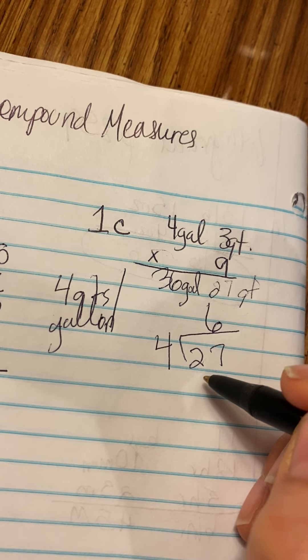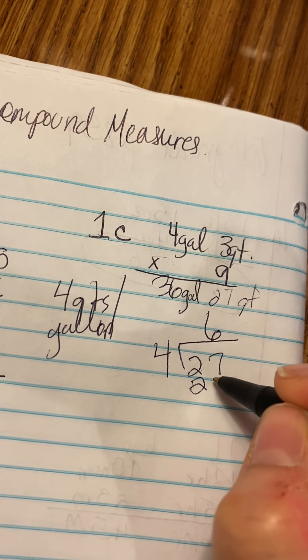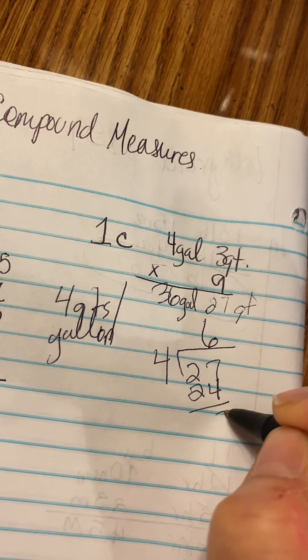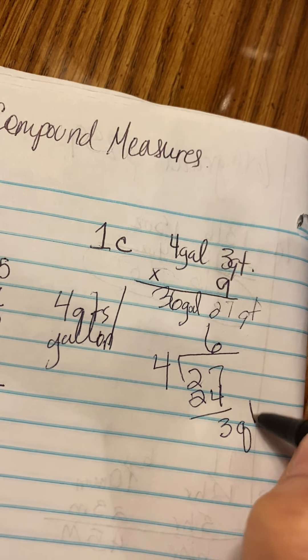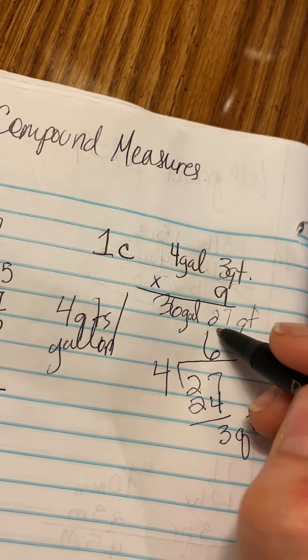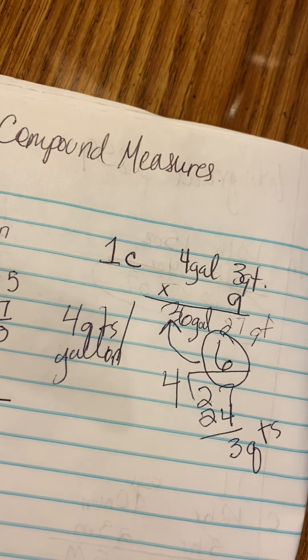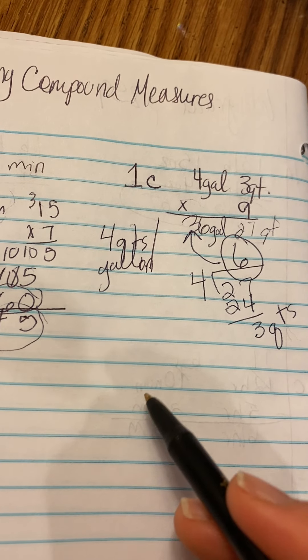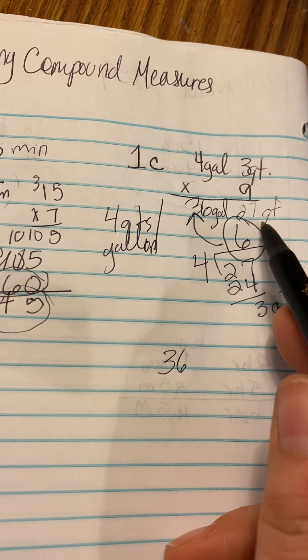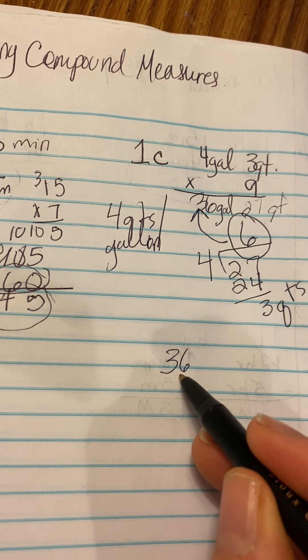6. 4 times 6 is 24. And we have 3 quarts left over. And we're going to add these gallons over here. So we have 36 plus the 6 that were on the other side.